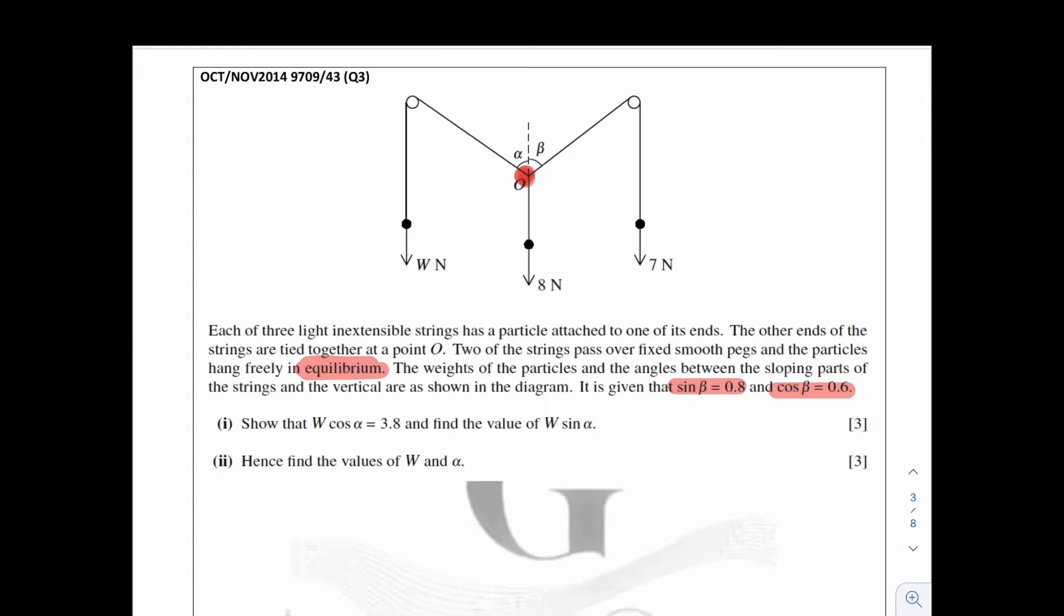So it's being pulled by three forces here: 8N, this tension, and this tension. I'll name this one as tension 1 and this one as tension 2. Remember, the tension is a pulling force, so it must be away from the object, away from the point. So it cannot be into the point here. The direction of the tension must be correct in order to get the correct answer.